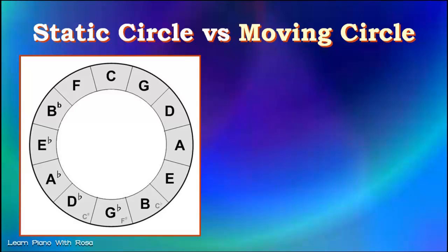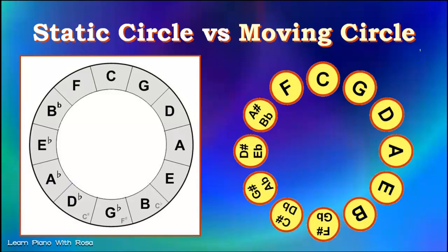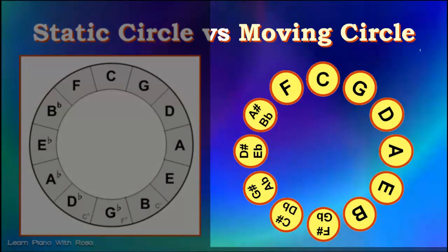On the left side, you see a static circle. On the right side here, I call this a moving circle. It's a dynamic circle. Notice how the letters are written. They're not really facing you, are they?